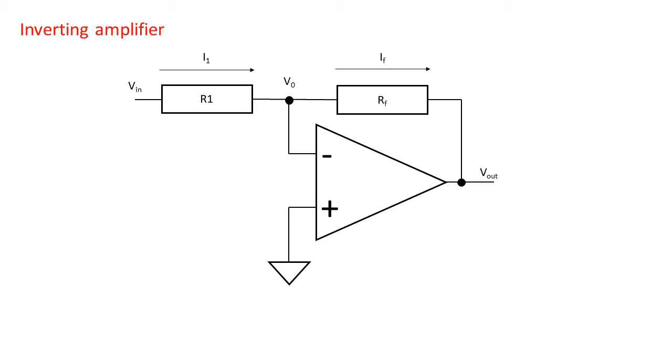The current through R1 is called I1, the current through the feedback resistor is called IF.